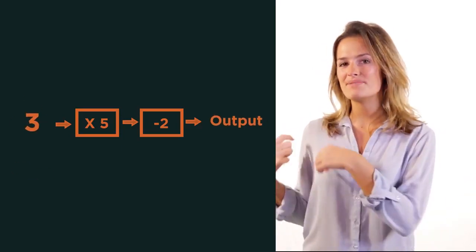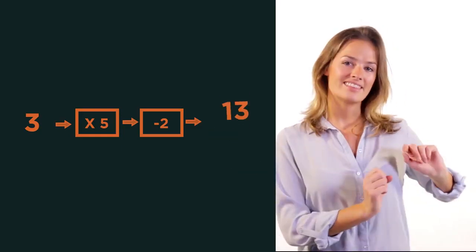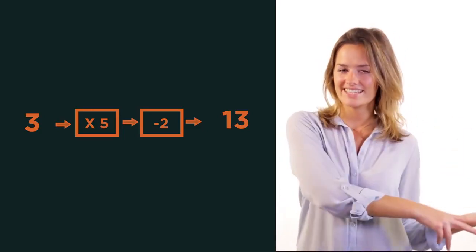So if we input 3 into a function, multiply by 5, subtract 2, then 13 is outputted. 3 has transformed into 13.